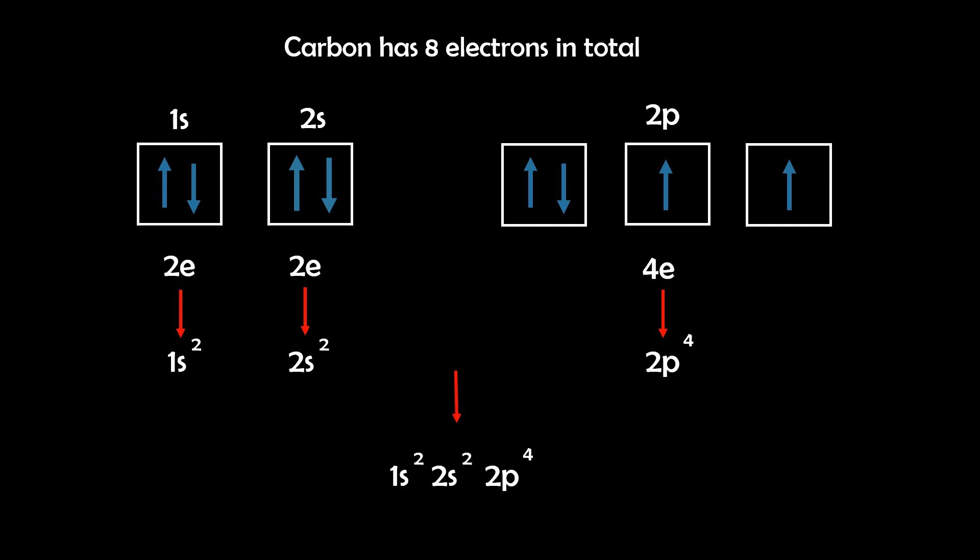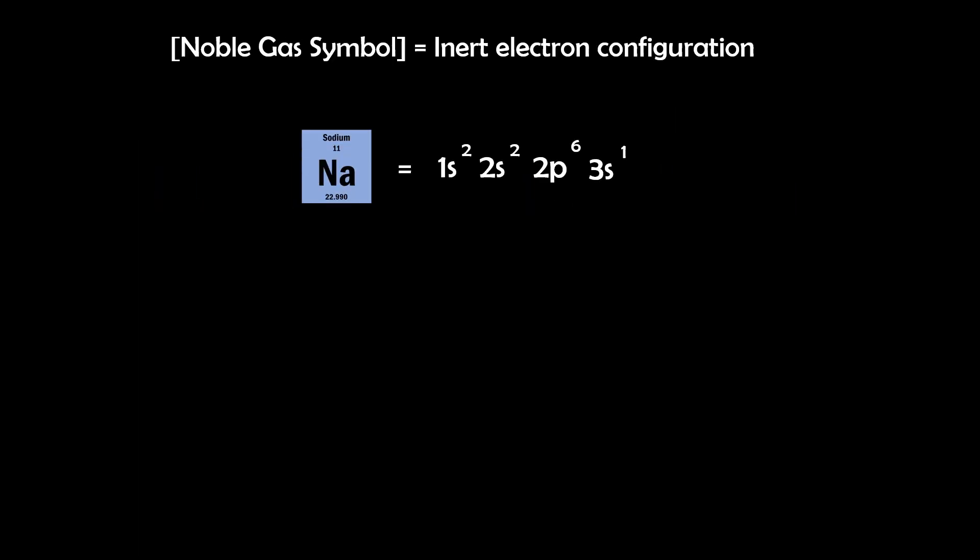So a convenient convention for electron configurations is using the noble gas symbol in square brackets to represent the inert electron configuration for a row. For example, take sodium, with the configuration 1s2, 2s2, 2p6, 3s1.